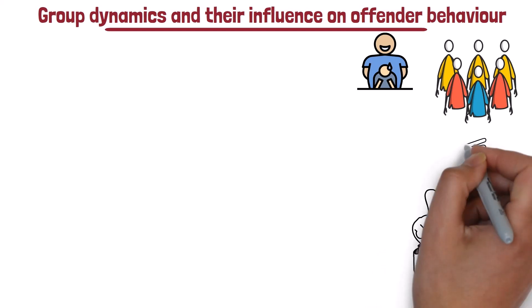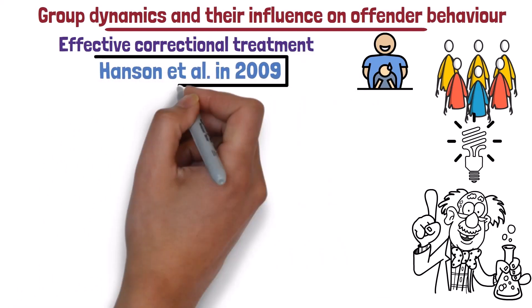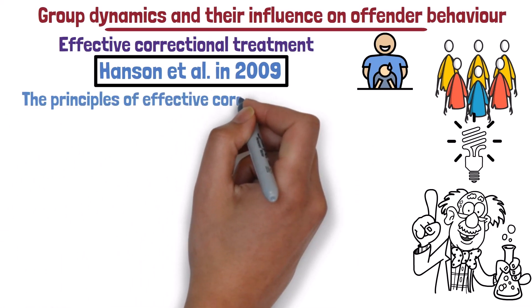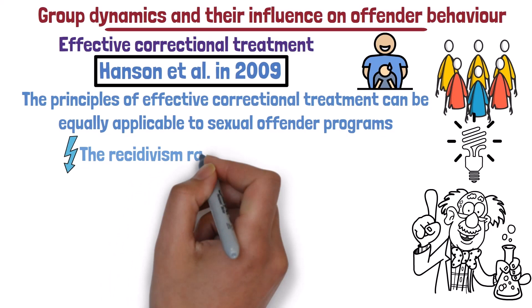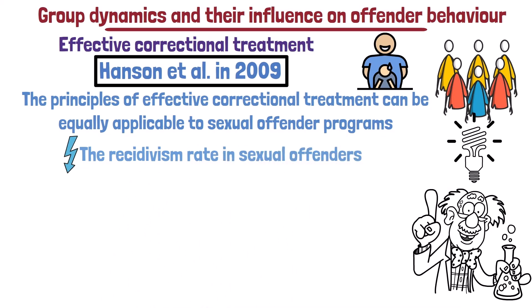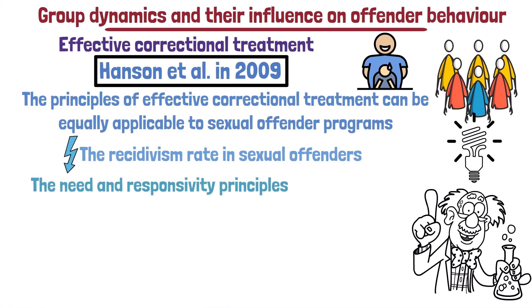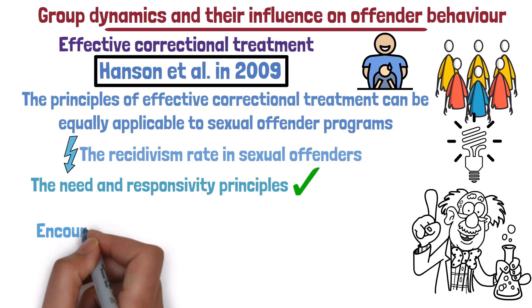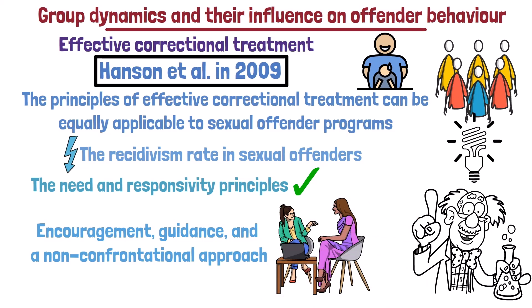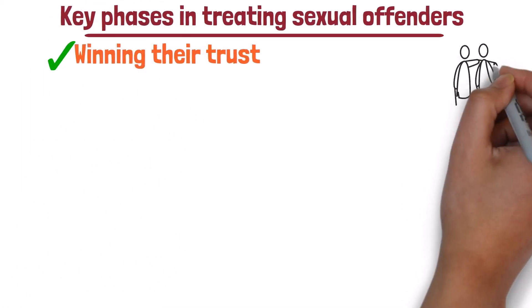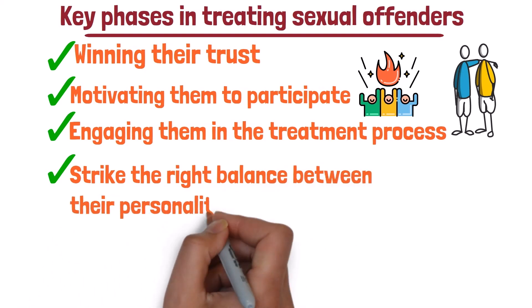Much of what we've discussed about effective correctional treatment applies to sexual offenders as well. Studies such as the one conducted by Hansen et al. in 2009 have shown that the principles of effective correctional treatment can be equally applicable to sexual offender programs. When reducing recidivism, the need and responsivity principles play a more significant role than the risk principle. Therapists need to adopt qualities such as encouragement, guidance, and a non-confrontational approach. Key phases involve winning trust, motivating participation, and engaging offenders in treatment, with therapists striking the right balance between personality and treatment delivery.